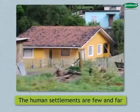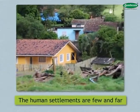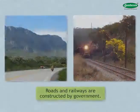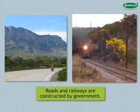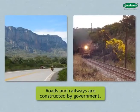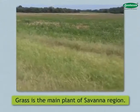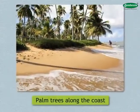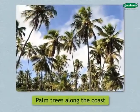Human settlements are few and far between in this area. To overcome these problems, the government has constructed roads and railways. Grass is the main plant of the Savannah region, and on the coast, palm trees are commonly seen.